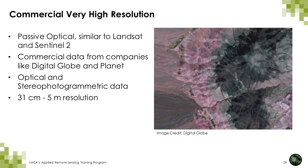In addition to satellite imagery from publicly available satellites like Landsat and Sentinel, there's also very high resolution data available through commercial companies like Digital Globe and Planet. These companies provide data at a very fine resolution — from 31 centimeters to 5 meters — which can provide even more detail when looking at landscape changes. These satellite systems provide data for both optical and stereophotogrammetric purposes.